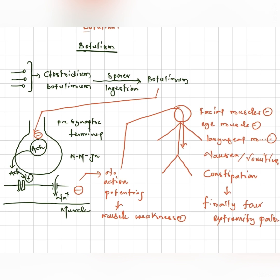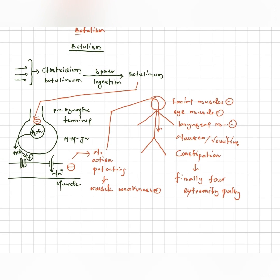Now you just see, what happens if the eye muscles are deactivated? Double vision or diplopia will happen. If laryngeal muscles are deactivated, there will be hoarseness of voice.